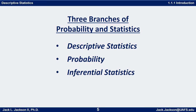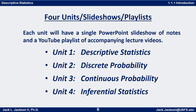There are three main branches of probability and statistics we'll be studying: descriptive statistics, probability, and inferential statistics. In my course I divide it into four units. Unit one is descriptive statistics — that's where we're starting right here. Unit two will be discrete probability, unit three continuous probability, and unit four inferential statistics.